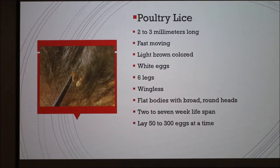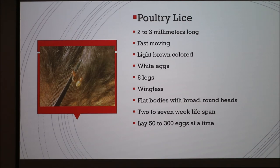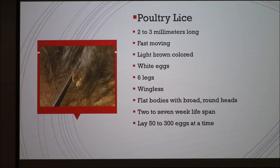Poultry lice are two to three millimeters long — small, but a fairly decent size; you can see them. They move fast. Most people think lice are white, but they're actually a light brown color, and their eggs are white. They have six legs, no wings, flat bodies, and broad round heads. The lifespan of lice is between two to seven weeks, and they can lay anywhere between 50 and 300 eggs at a time, so they multiply quickly.